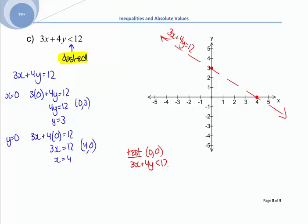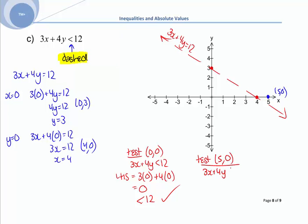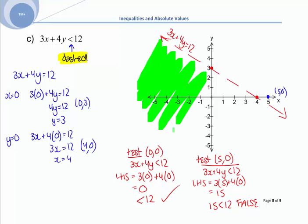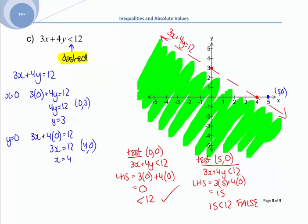Testing (0, 0) in 3x + 4y < 12: left-hand side = 3(0) + 4(0) = 0, and 0 < 12 is true. Testing a point on the other side, (5, 0): left-hand side = 3(5) + 4(0) = 15, and 15 < 12 is false. So I need the side that includes (0, 0). That is the shaded region, labelled 3x + 4y < 12.